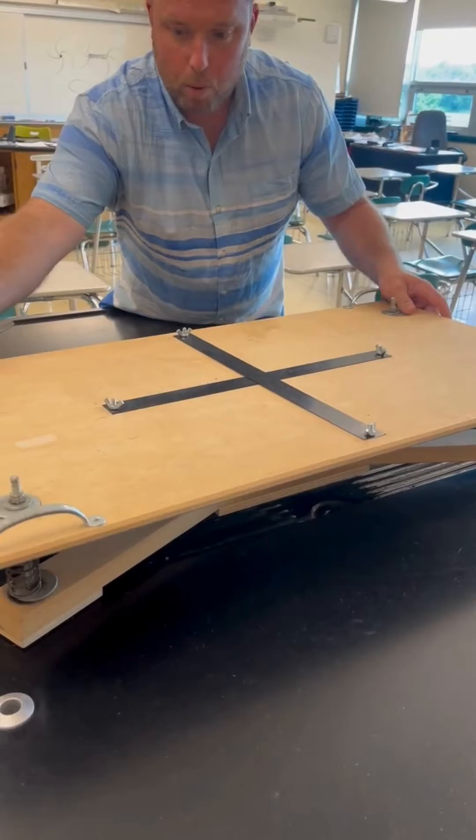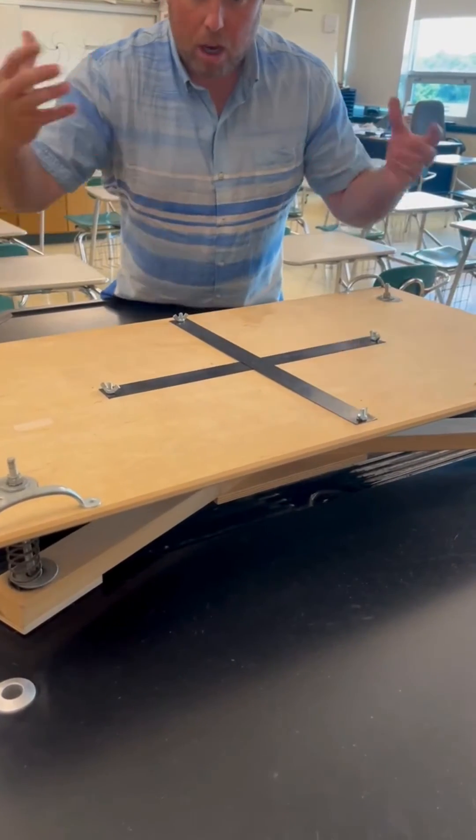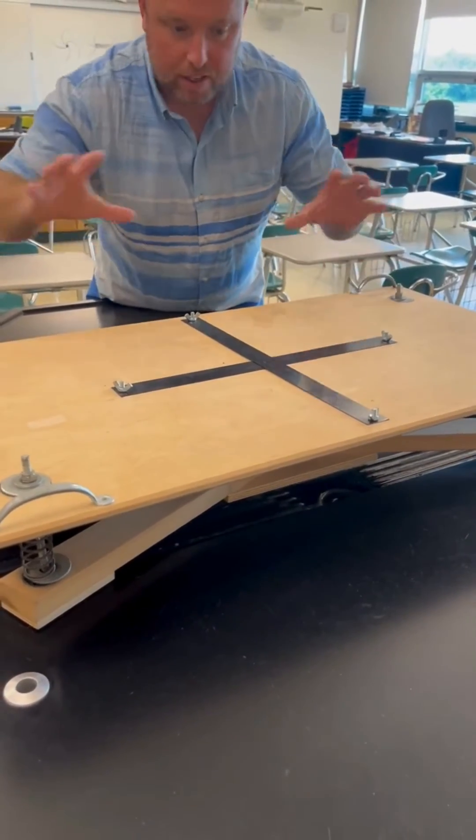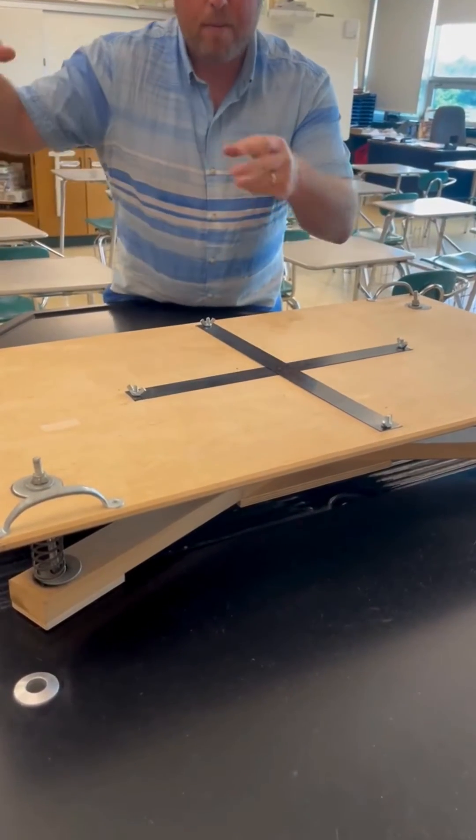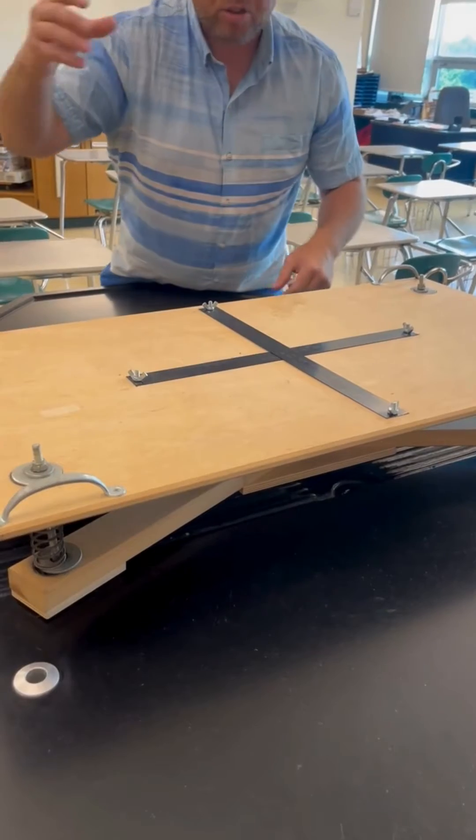So this is a little shake table. You can buy it online through various companies. It's a perfect demonstration to look at both the P wave, the S wave, and the two surface waves, which is the L and the R.